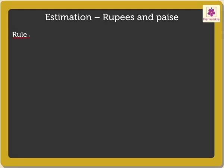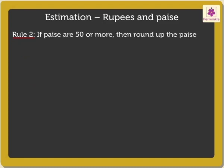Rule 2: if paise are 50 or more, then round up the paise to 1 rupee and add it to the rupees.